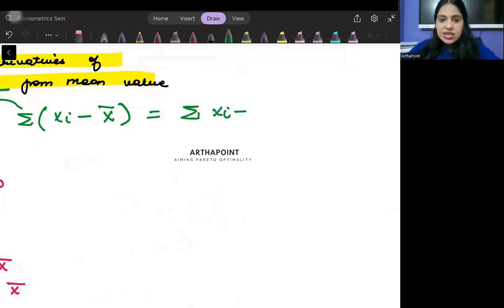This will be summation xi minus summation x bar, and this will be summation xi minus, because this is mean. Mean is a constant. Constant is getting added up n times so I can simply write this as n x bar.